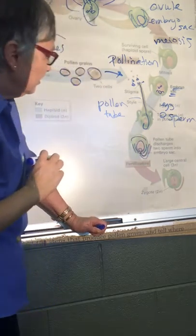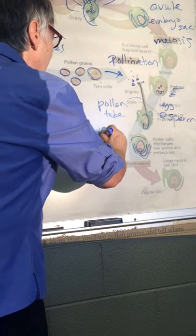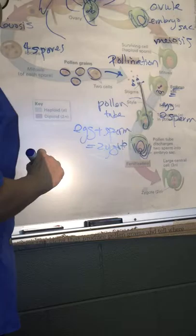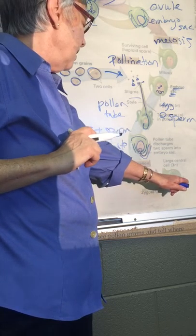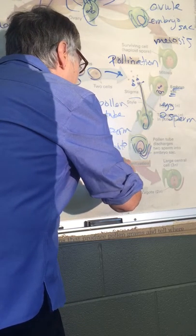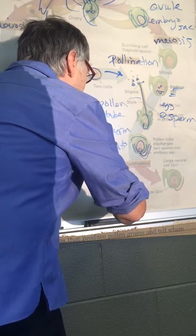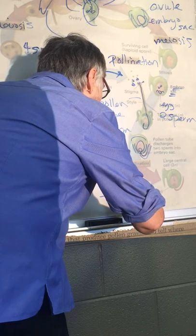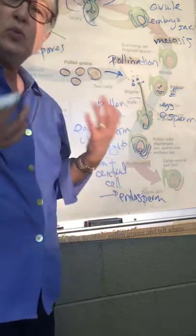There's some protective tissue. One sperm will fertilize the egg, so egg plus sperm equals zygote. The second sperm will actually fertilize some additional cells within the embryo sac. So sperm plus central cell gives rise to the endosperm, which will produce the food material.